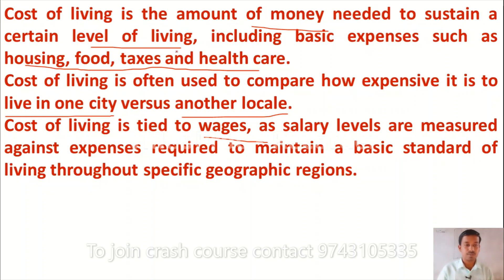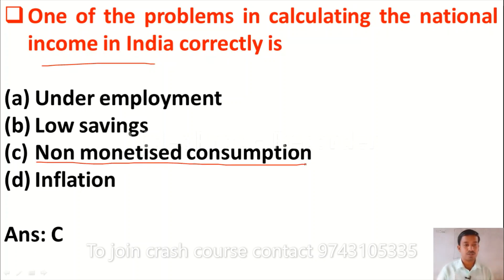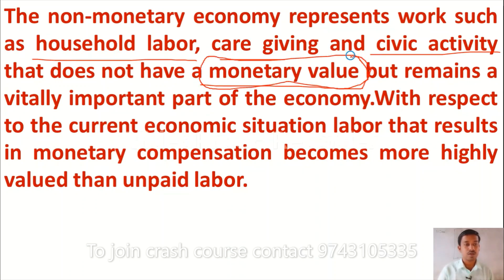The next question is: one of the problems in correctly calculating national income in India is — option A: underemployment, option B: low savings, option C: non-monetized consumption, option D: inflation. The correct answer is option C, non-monetized consumption. This is a major problem because we are unable to measure some economic activities in monetary terms, such as household labour, caregiving, or civic activities that do not carry monetary value.